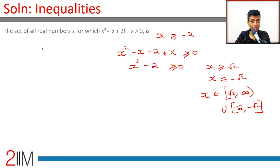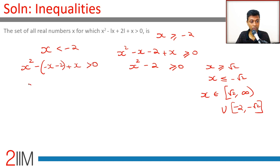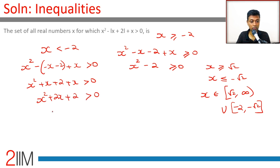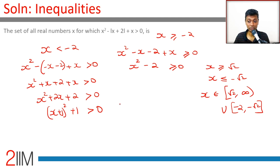Case 2: when x is less than minus 2, the expression becomes x² minus (minus x minus 2) plus x greater than 0, which gives x² plus x plus 2 plus x greater than 0, simplifying to x² plus 2x plus 2 greater than 0. This factors as (x+1)² plus 1 greater than 0, which is always true. So this holds for all x less than minus 2.